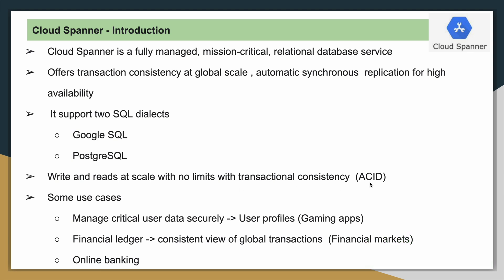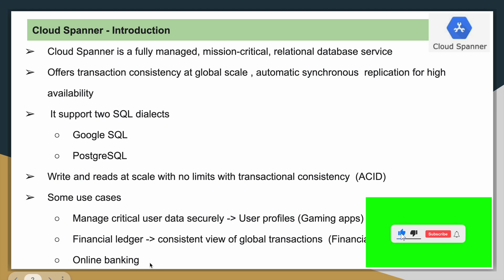It also supports ACID properties like other relational databases. Some important use cases of Cloud Spanner include managing critical user data securely. For example, a gaming application at global scale — to store and manage user profiles globally, we can use Cloud Spanner. In financial markets, to manage and store financial ledger information, and for online banking use cases since it is a transactional database.